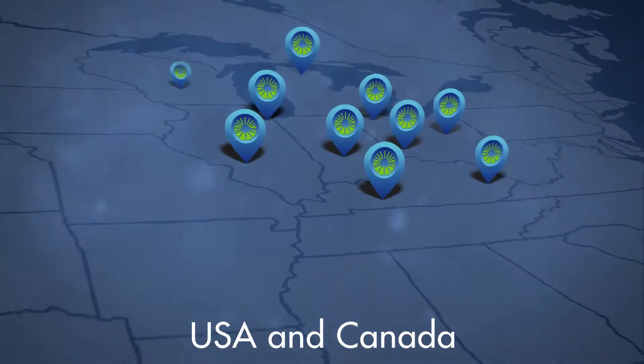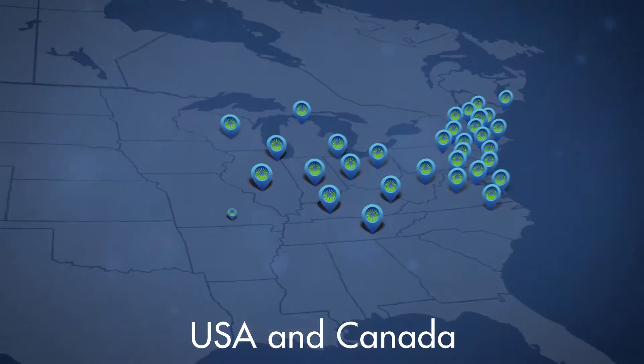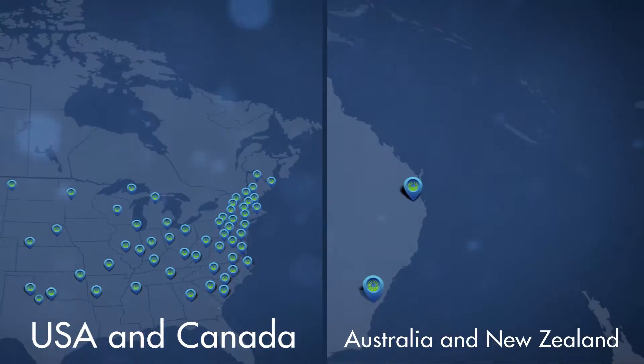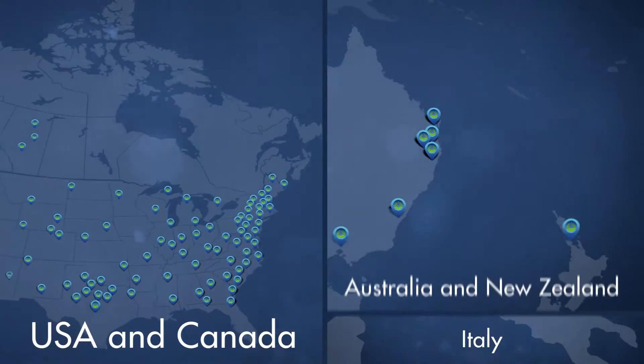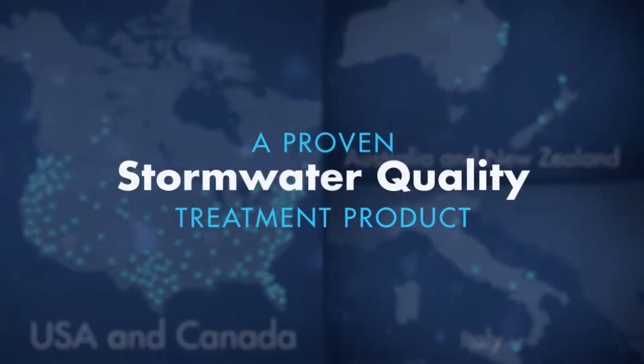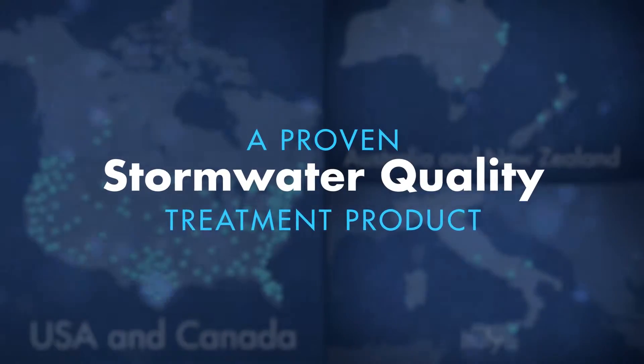With over 150,000 cartridges in use and performance verified by multiple regulatory agencies, including the Washington State Department of Ecology and the New Jersey Department of Environmental Protection, the storm filter is a proven stormwater quality treatment product.